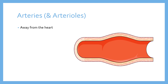Arteries begin with the letter A, which reminds us they go away from the heart. They don't always carry oxygenated blood, but they usually do. The exception is the pulmonary artery — the word pulmonary relates to the lungs. So the artery going away from the heart but heading to the lungs is the only artery that doesn't carry oxygenated blood. It carries deoxygenated blood but is going away from the heart, so it's still classed as an artery.